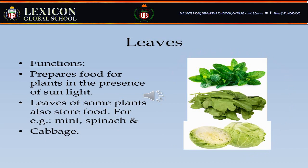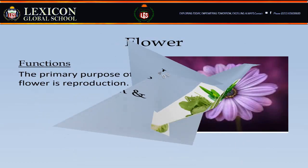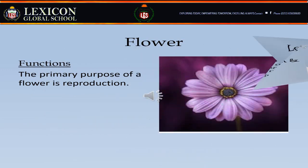Here you can see a picture of a flower. A flower is a part of a plant, also called the bloom or blossom. The primary purpose of a flower is reproduction.